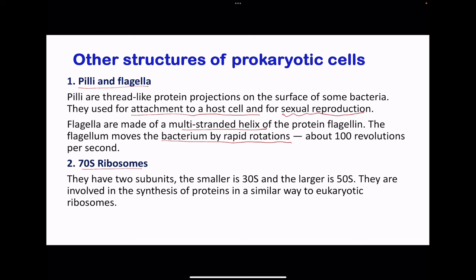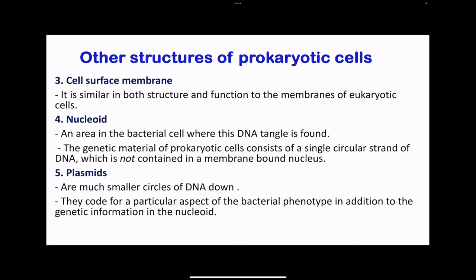The 70S ribosome contains a larger subunit and a smaller subunit. The smaller subunit is the 30S, while the larger one is the 50S. These are involved in protein synthesis in a similar way as in eukaryotic ribosomes. The cell surface membrane is similar in function as well as composition to that seen in eukaryotic cells — it's a phospholipid bilayer. The nucleoid is an area of the bacteria cell where the DNA tangle is formed. Some cells do have plasmids, which are smaller circles of DNA, and these code for aspects of the bacteria phenotype, such as antibiotic resistance. These plasmids are going to be replicated when the nucleoid is also replicated.